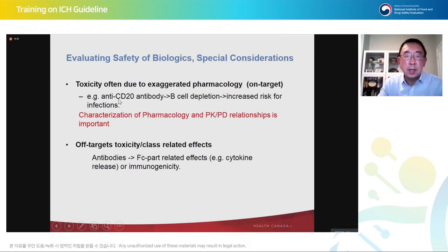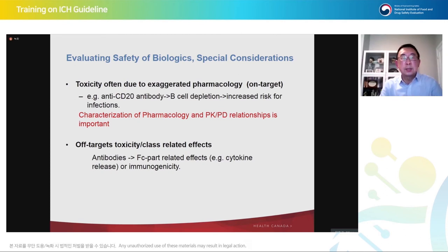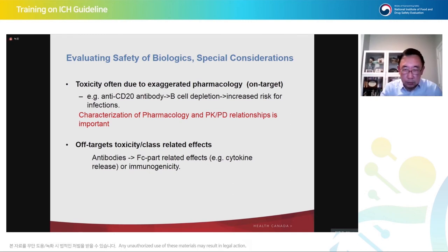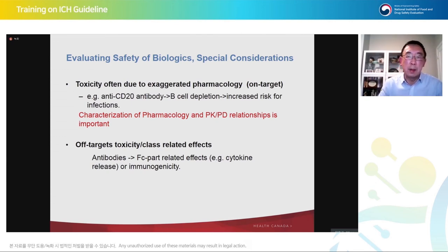There is a very specific toxicity profile for large molecules — the adverse reactions are based on exaggerated pharmacology, so they are on-target. For instance, a monoclonal antibody anti-CD20 targets B cells. When used in animals or humans, it will deplete all B cells from circulation. The consequence is that without B cells, you lose immune protection, leading to increased risk of infections — and you can predict this will happen in humans from the animal studies and take measures to mitigate the risk. The antibody also has off-target toxicity — it can trigger cytokine release. When you have cytokine release, that can have quite a bit of impact on patients with adverse reactions and potential drug-drug interactions. If immunogenicity is neutralizing, the biological pharmaceutical effect will disappear and you may have to keep increasing the dose.